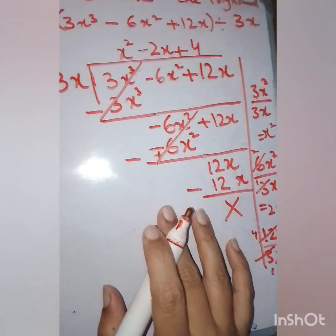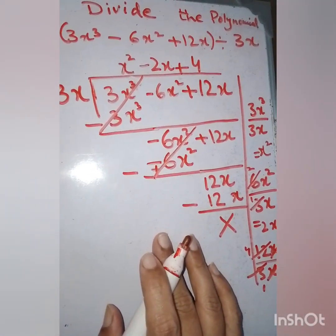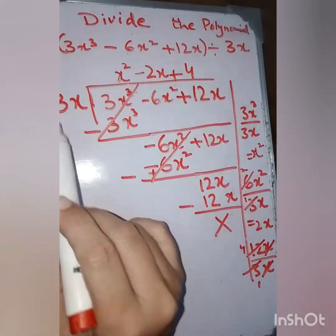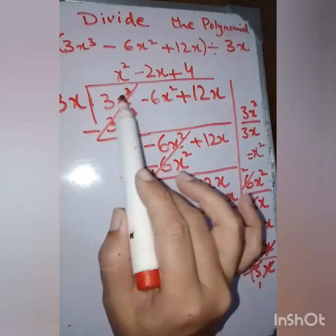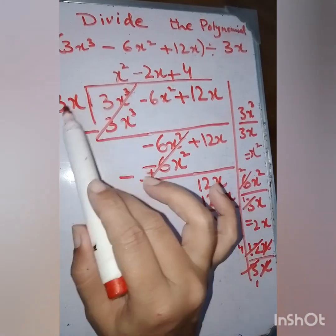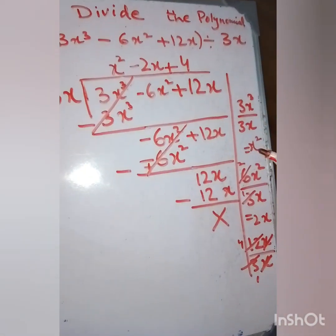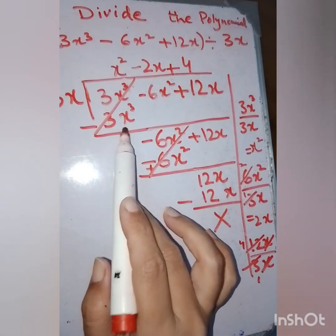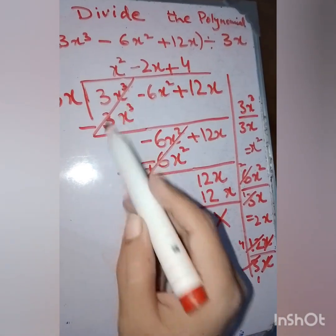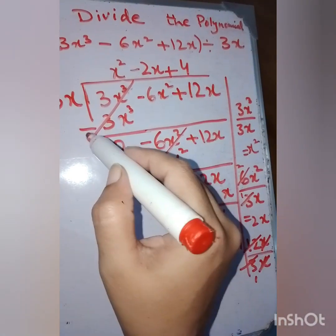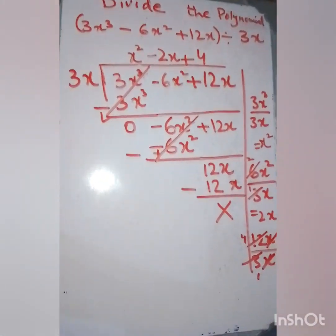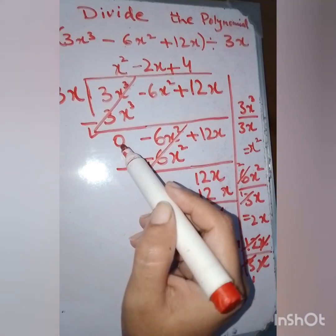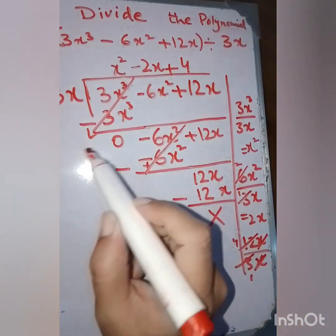Let me explain what I have done. The first term of the dividend divided by the divisor gives x². When x² is multiplied with the divisor, it gives 3x³. On subtracting, it leaves 0. This is a sign that you are doing it right. If you have a remainder here, you're probably making a mistake.